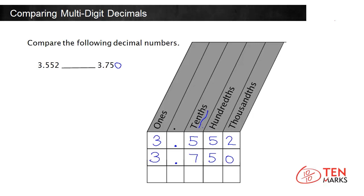Look at the tenths place. The tenths digit in the first decimal is 5. The tenths digit in the second decimal is 7. Since 5 is less than 7, 3 and 552 thousandths is less than 3 and 750 thousandths. Notice it doesn't matter what the digits are after the tenths place — 3 and 7 tenths will always be greater than 3 and 5 tenths.